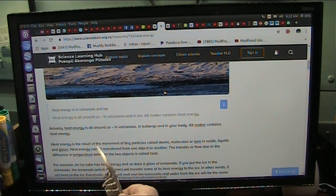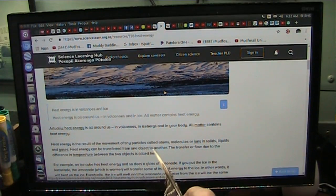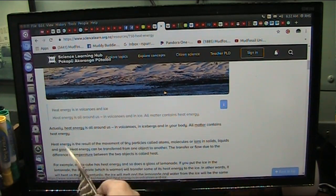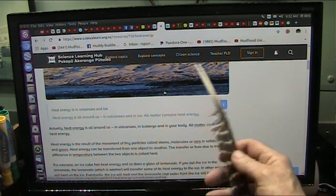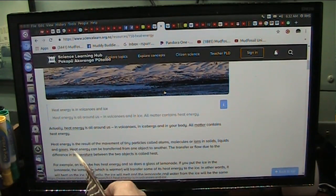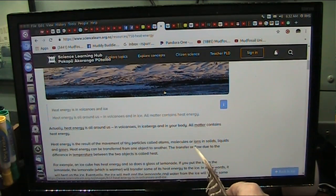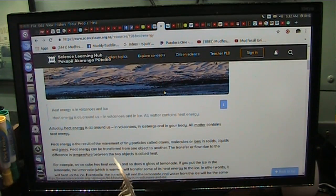Heat energy is the result of the movement now of tiny particles called atoms, in molecules, in ions, solids, liquids, gases - they all flap inside. Heat energy can be transferred from one object to another. The transfer or flow due to the difference in temperature between the two objects is called heat. What flows? What flows?